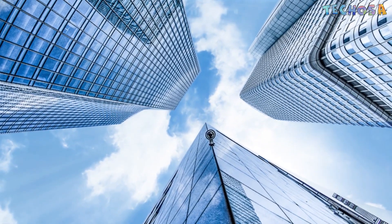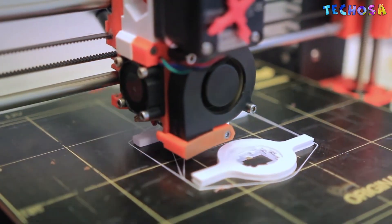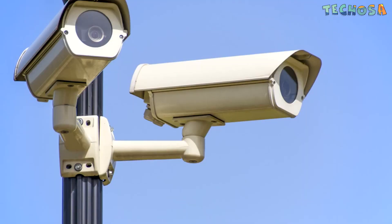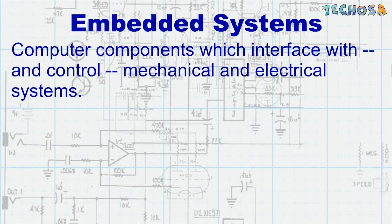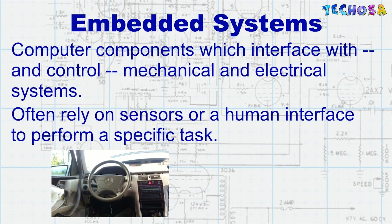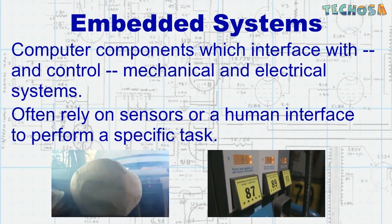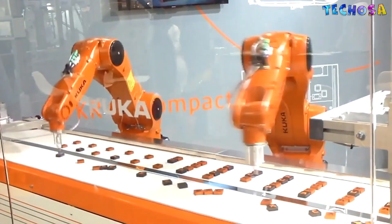No matter where you go or what you do, an embedded system is helping you, serving you, and protecting you. Embedded systems are computer components which interface with and control mechanical and electrical systems. They often rely on sensors, like an airbag in a car, or a human interface to perform a specific task.